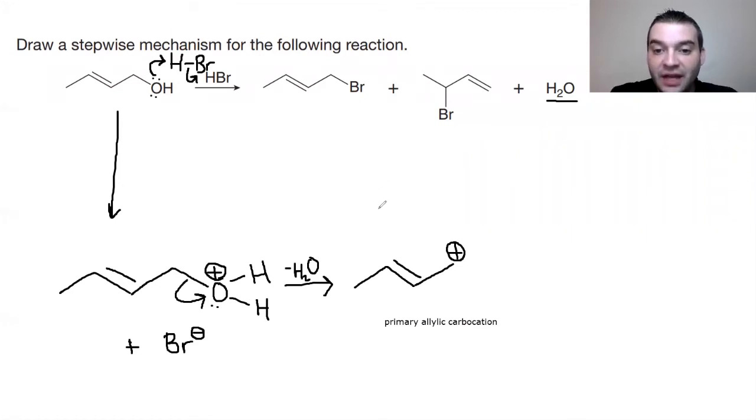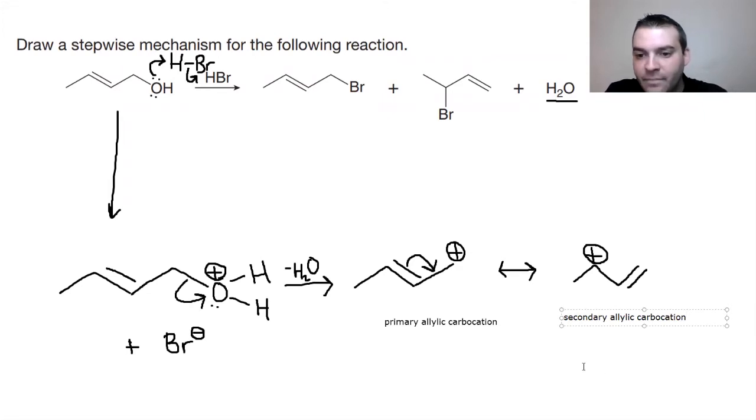But in this particular case also, anytime you have a double bond right next door to a positive charge, the double bond is going to shift over and we're going to generate another resonance structure. And be careful about which arrows you use for resonance structures. But now we'll have a terminal double bond. And in this case, we'll have a secondary allylic carbocation. And so in this case, which of these two do you think is going to now be more stable, primary or secondary?